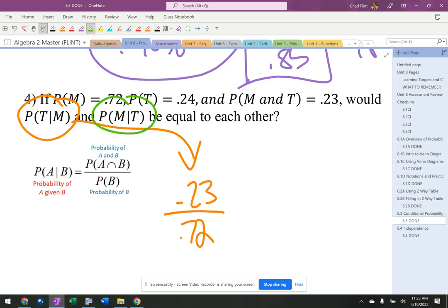Then this one is going to have T go on the bottom, which is 0.24, and the top is going to be the and again, which is 0.23.